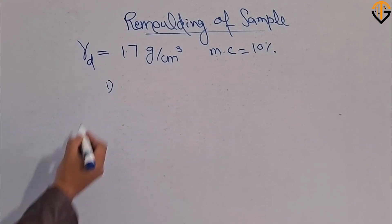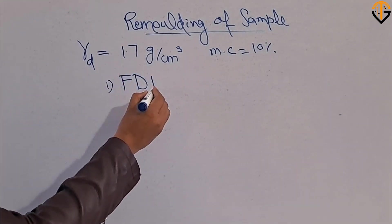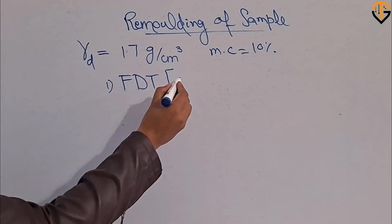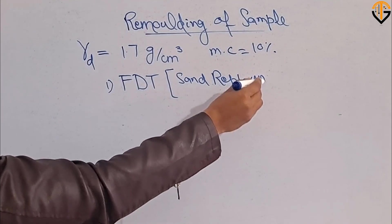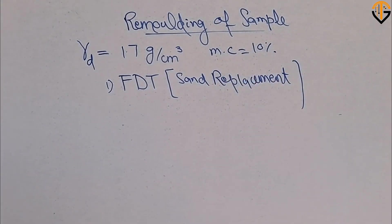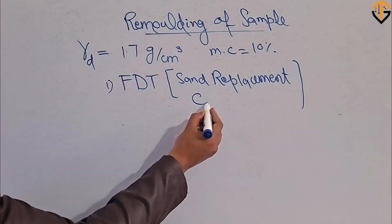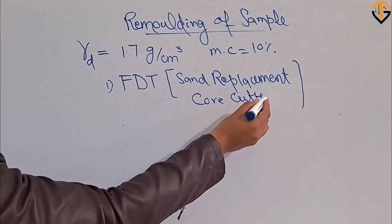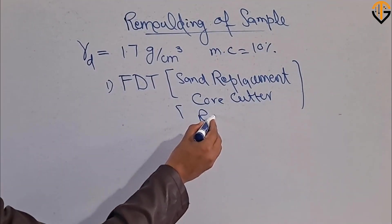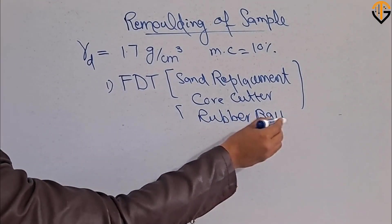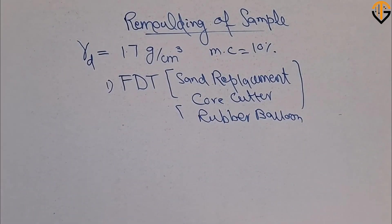Dry density and moisture content can be obtained using different ways. One way is to perform field density tests (FDT). Field density tests include the sand cone method or sand replacement method. If you perform the sand replacement method, you will obtain dry density and moisture content. In the field, you can also perform a speedy moisture test to determine moisture content. Another method is the core cutter method, which determines the density of the soil in the field. Additionally, there is the rubber balloon method.